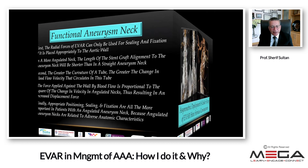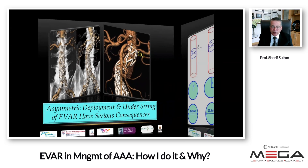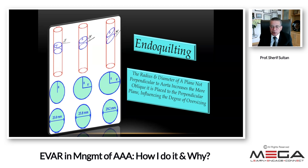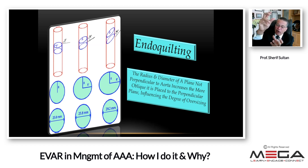Asymmetric deployment and undersizing have serious consequences — you can end up with a larger endoleak or total migration, so everything must be done by the book. Endo-tilting is the ability to allow both areas to be at the same level so that you don't have one area bigger or smaller. You can achieve this through the radius and diameter of the plane — the more oblique the placement relative to perpendicular, the greater the influence on the degree of oversizing. For the Gore graft, you can tilt it by twisting, pulling the underquist inside so the neck sits nicely, whether in TVAR or EVAR.